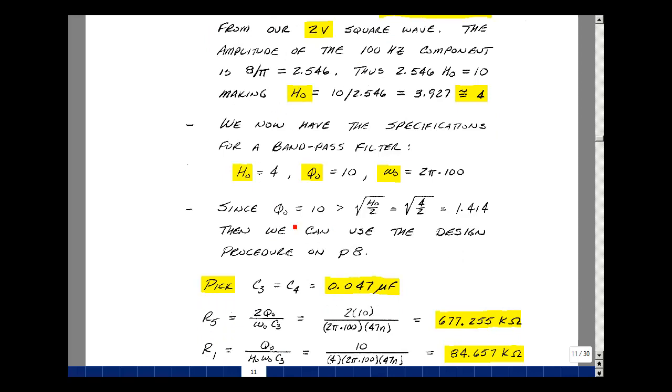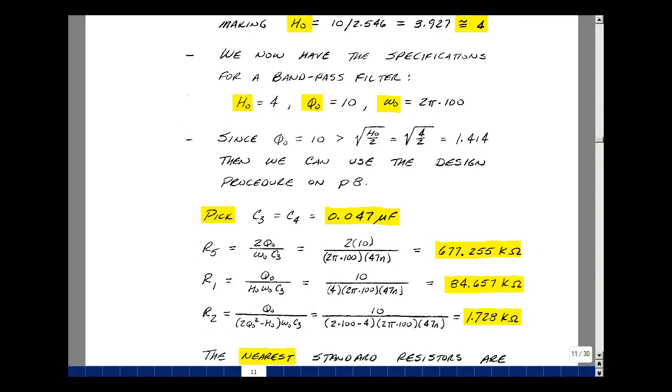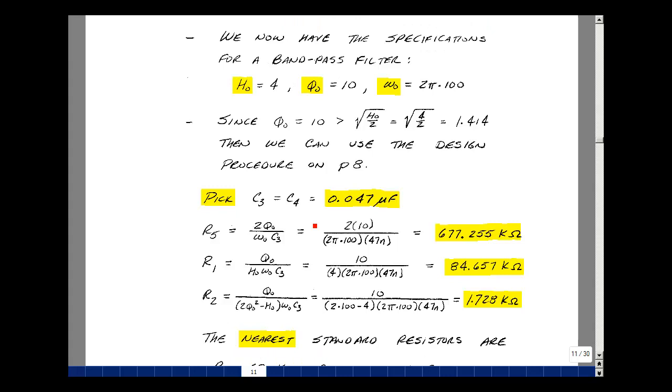So these are my parameters for my filter. Let's check that this inequality is satisfied. So I've got a q-naught of 10, h-naught was equal to 4, so this is equal to 1.414, and of course 10 is greater than that, so our procedure will work. I don't have any negative resistors. Pick C3 equal to C4. I'll pick a 0.047 microfarad capacitor, that's in our parts box. I'll solve for R5, which is 2 times q-naught, which is 10. Omega-naught is 2 pi times 100, and C3 is 47 nanofarads. That's 677.255k. R1 is going to be equal to 10, divided by h-naught, which is 4, 2 pi times 147 nanofarads, and that's 84.657k. And lastly, R2 is 10, divided by 2 times 10 squared, minus 4, times 2 pi 100 times 47 nanofarads. That's 1.728k.